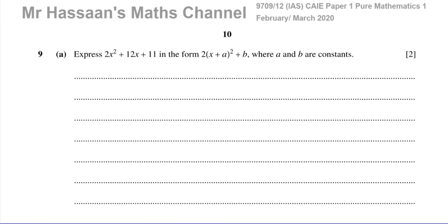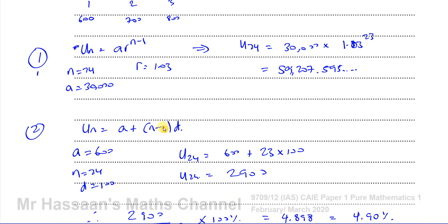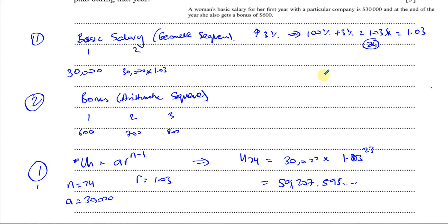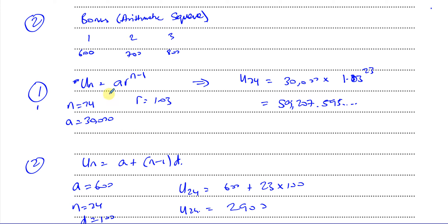That's the end of question 8 — not too difficult. The key is recognizing that the salary is geometric and the bonus is arithmetic, and using the appropriate formulas. Make sure not to confuse the formula for a particular term with the sum formula. The sum formula would be used if asked for, say, the total of all bonuses over 24 years as a percentage of all salaries. Both sets of formulas are found in the formula book.